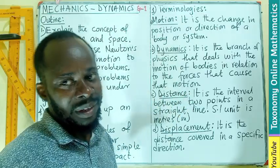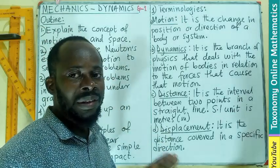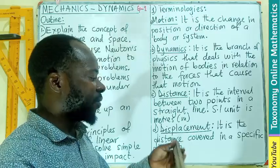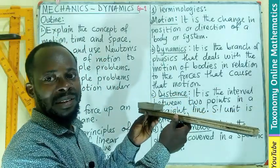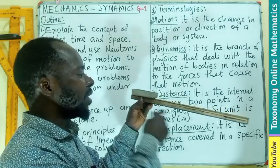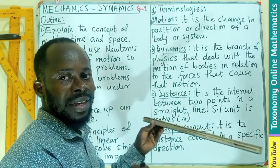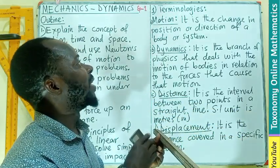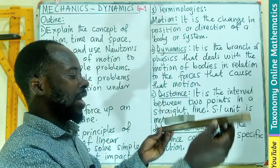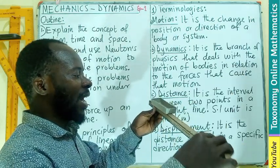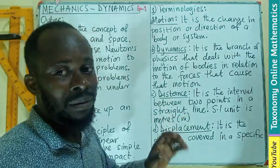Motion is basically the change in position or direction of a body or a system. If a body is placed here and it changes position — moving from where it was originally placed to a different place — then we can talk of motion. So a change in position or direction: if a body is moving one way and we change the direction so it moves in the opposite direction, that also gives us motion.